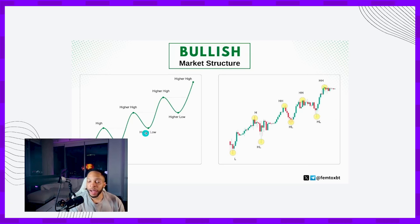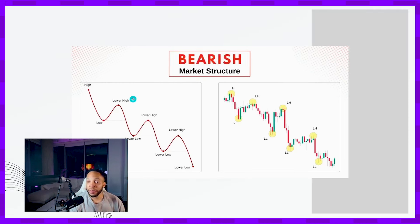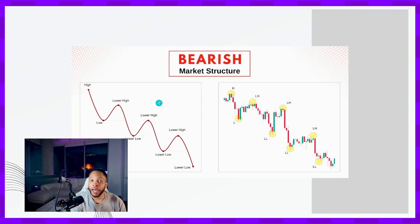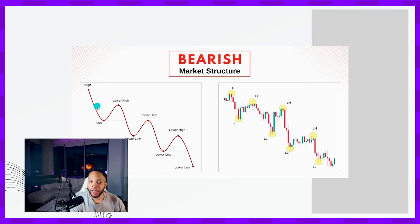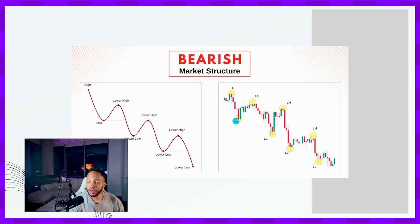Higher highs and higher lows establish a consistent trend that's continually pushing to the upside. In a bearish market, you can make money by buying puts in options trading or buying shorts in other markets. With a bearish market you're going to see lower highs and lower lows — that gives you a consistent trend and movement to the downside.